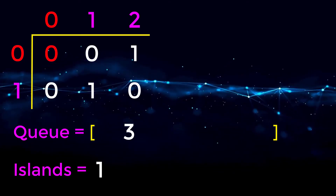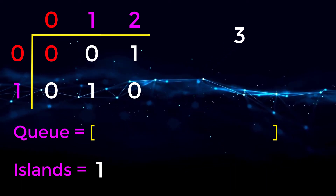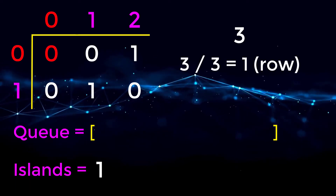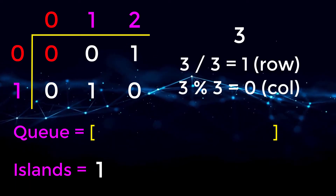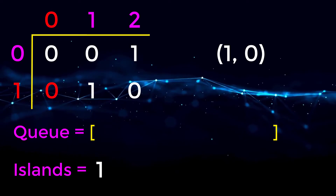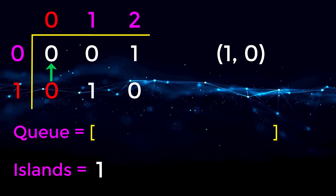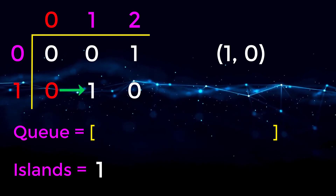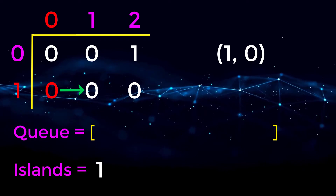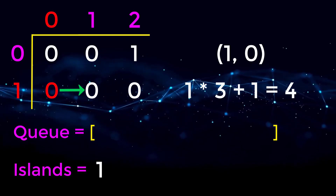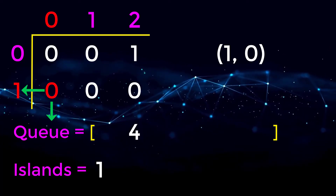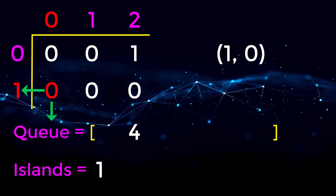We repeat the same steps — pull from our queue and get index three. Converting back to 2D: three divided by three is one for the row, and three mod three is zero for the column, giving us position one zero. Checking all directions from there: above is zero, just water. To the right at position one one is land, so we change it to zero and add the 1D coordinate to our queue: one times three plus one equals four. Below and to the left are out of bounds.